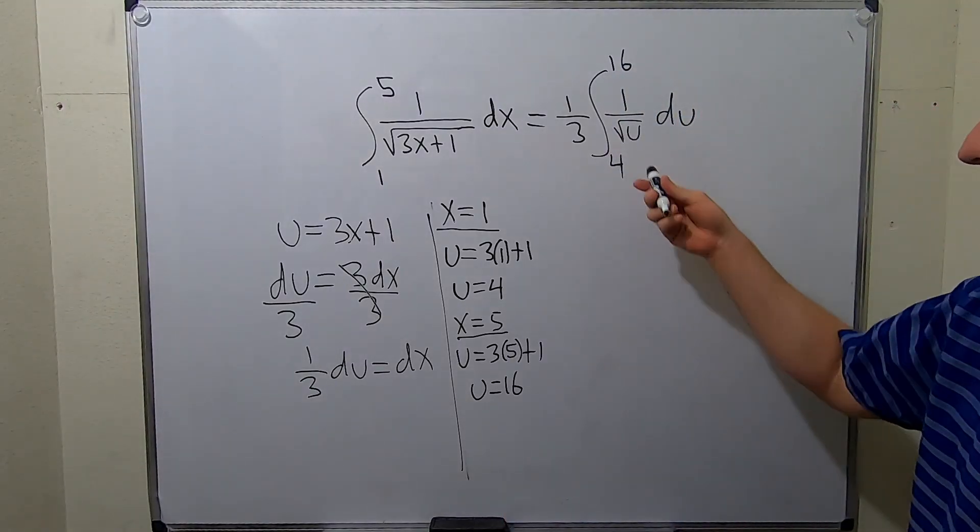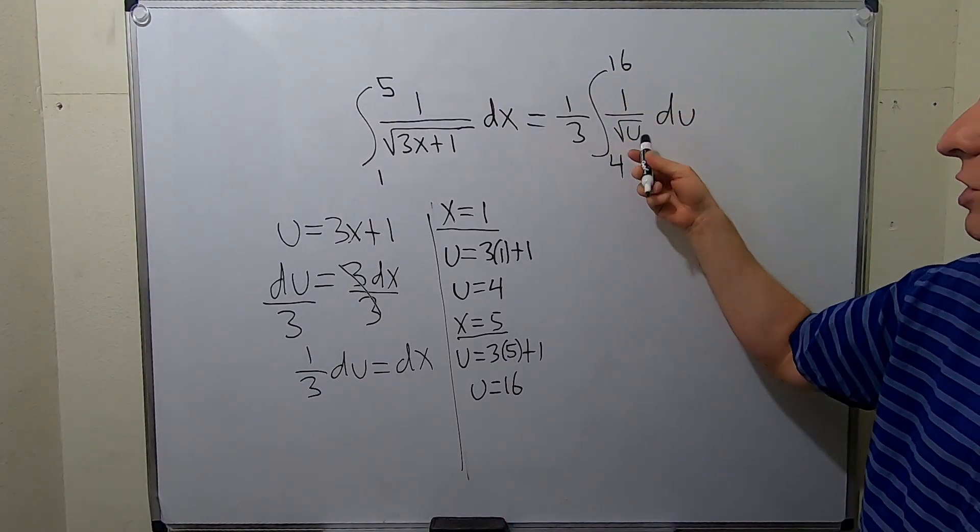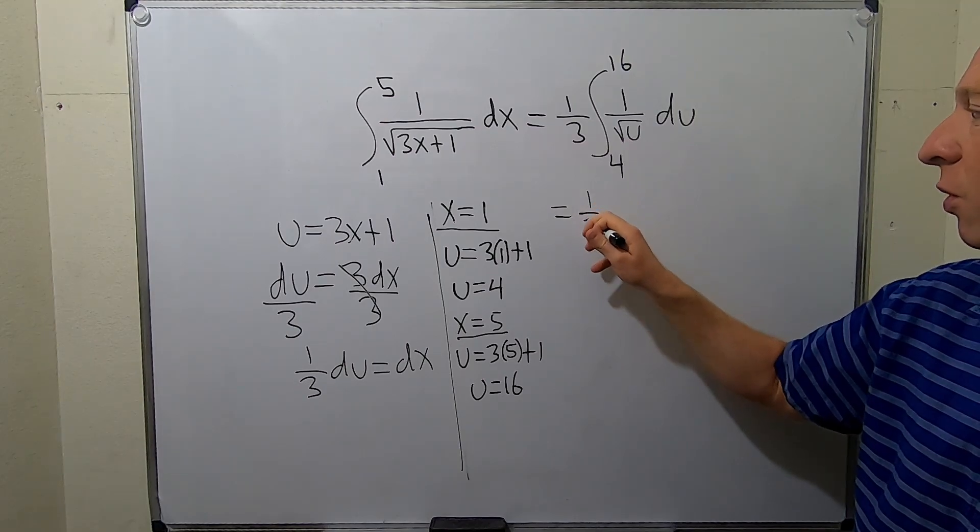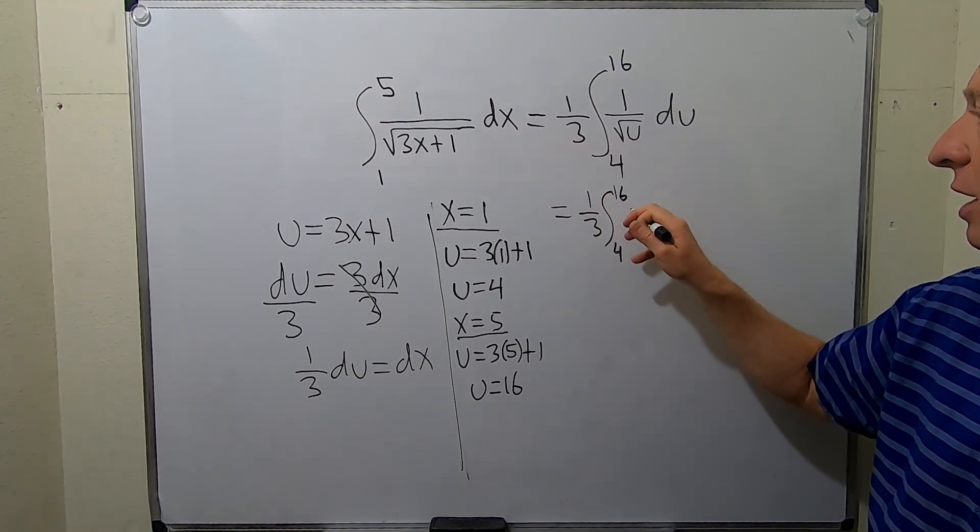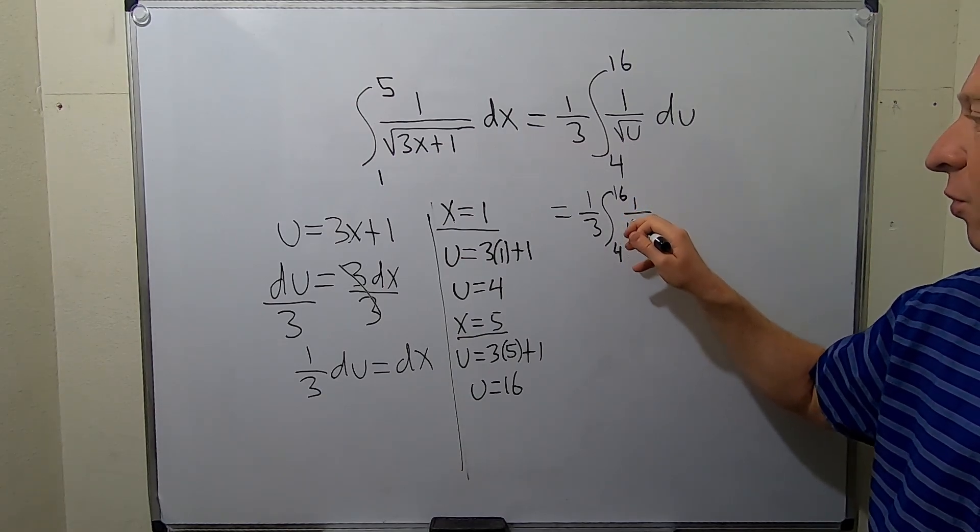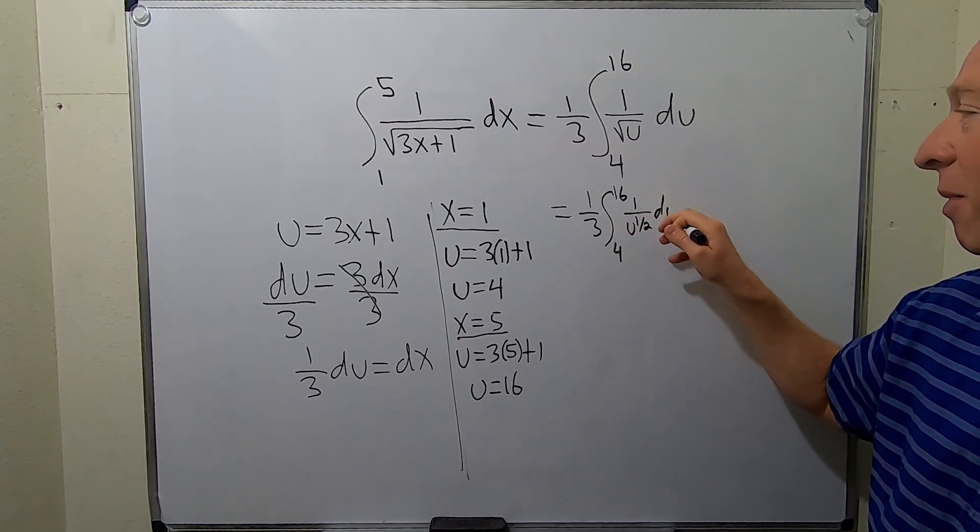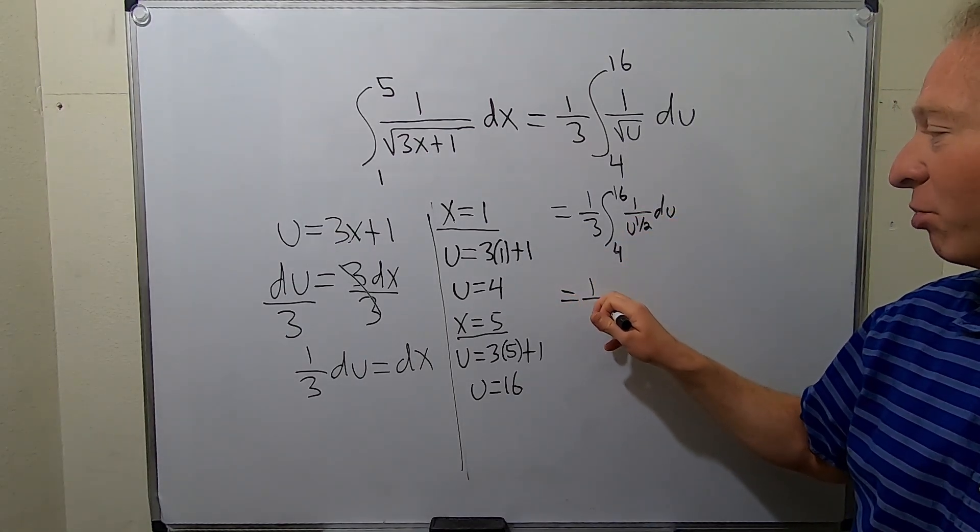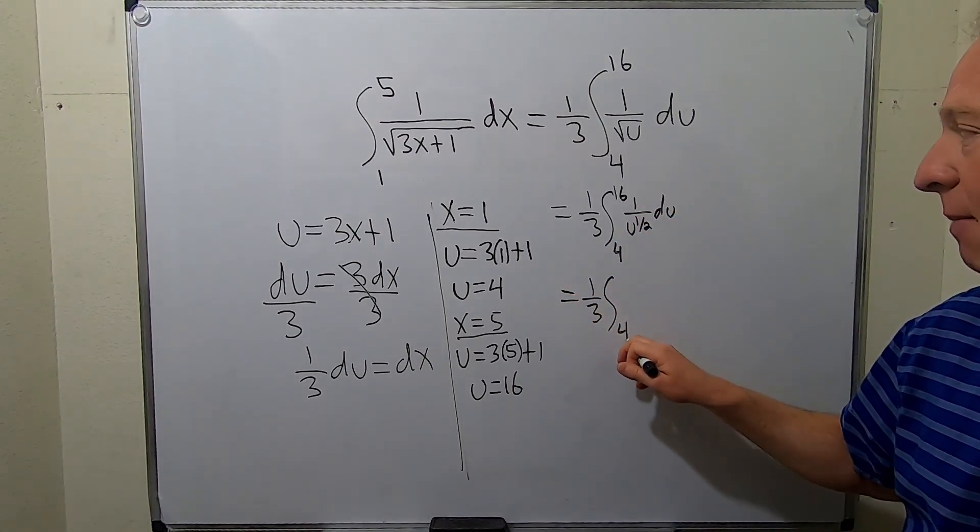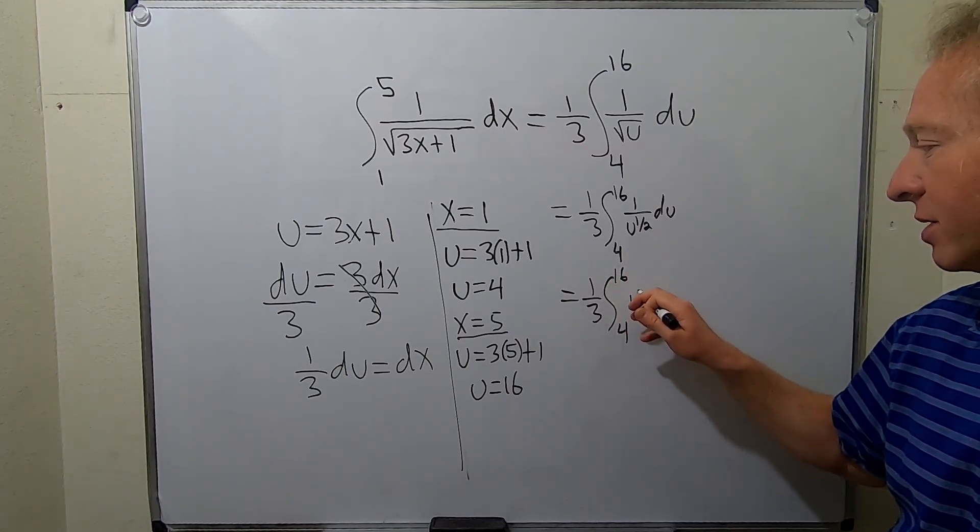So now we have to integrate it. So basically this is 1 over u to the 1 half. So what you do is rewrite it like this: 1 over u to the 1 half. I was going to skip a step but I didn't. The step I was going to skip is I was going to bring it upstairs. So when you bring it upstairs, what happens is the exponent becomes negative.